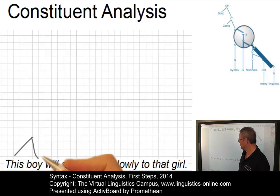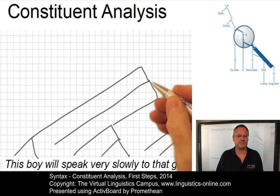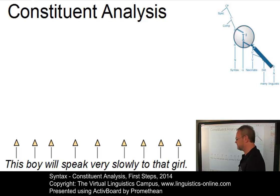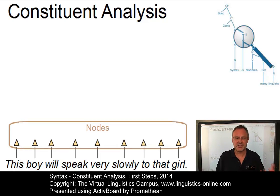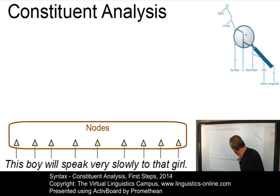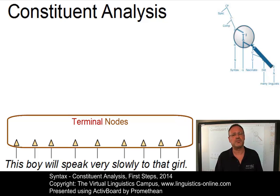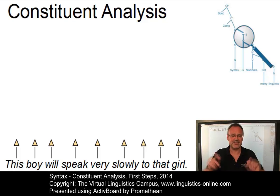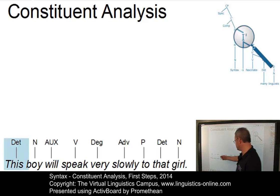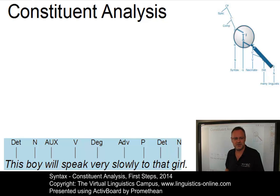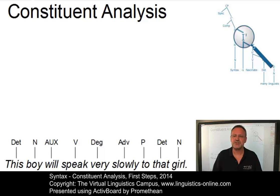Now we have all the space to develop our constituent hierarchy. In a first step, we associate each word with its own branch and a label on top. These labels are referred to as nodes. Since these nodes, represented as little deltas, are lowest in the hierarchy, they are referred to as terminal nodes. Let us now replace the deltas by respective syntactic categories: 'this' is a determiner, 'boy' a noun, 'will' an auxiliary verb, 'speak' a verb, 'very' a degree adverb, 'slowly' an adverb, 'to' a preposition, 'that' another determiner, and 'girl' another noun.